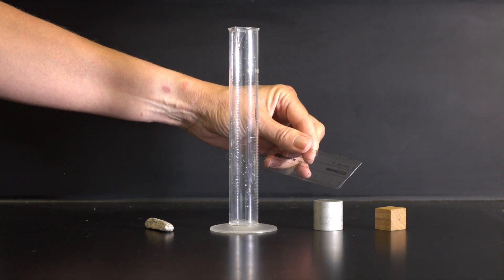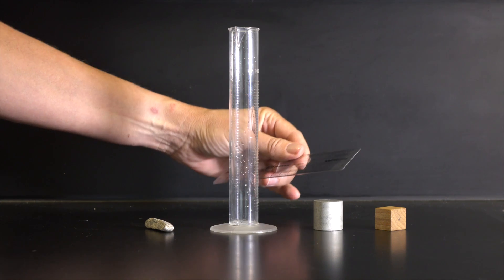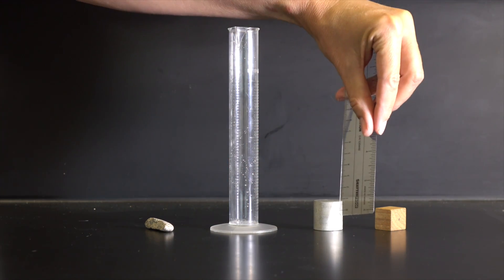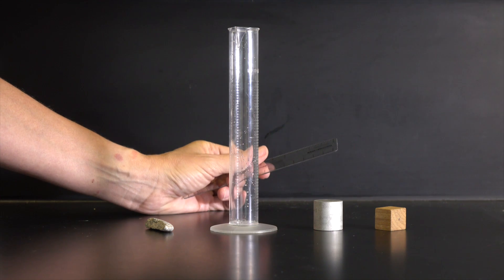For a cylinder, you measure the radius, square it, and multiply it by the height of the cylinder to get the cylinder's volume.